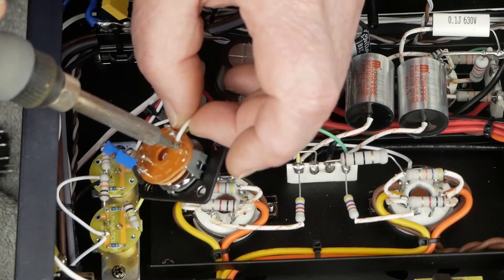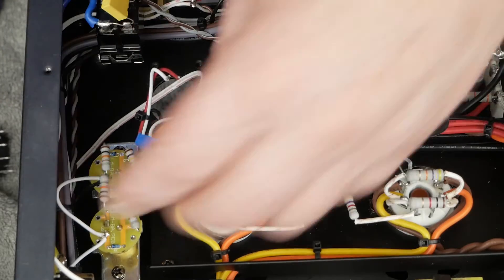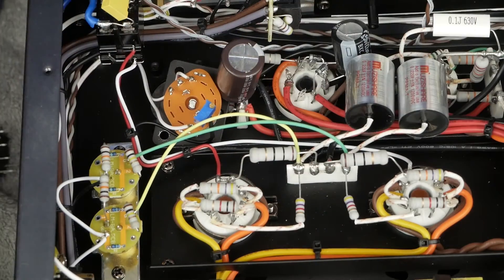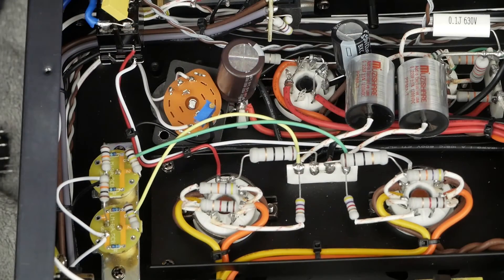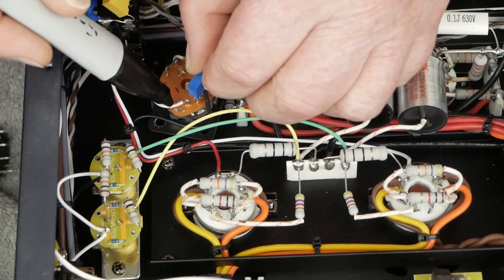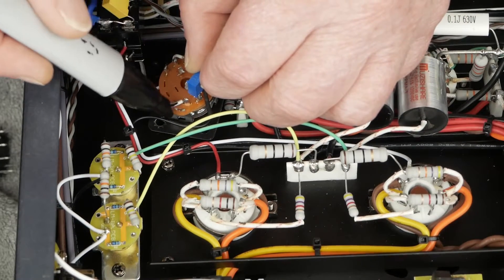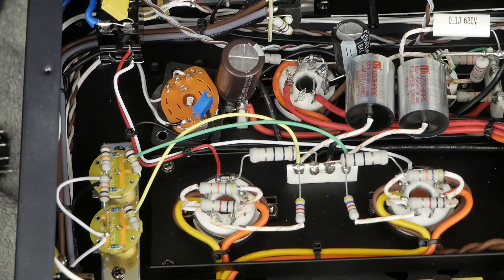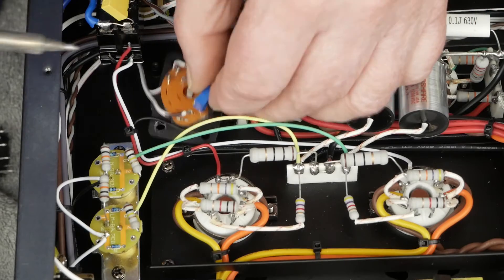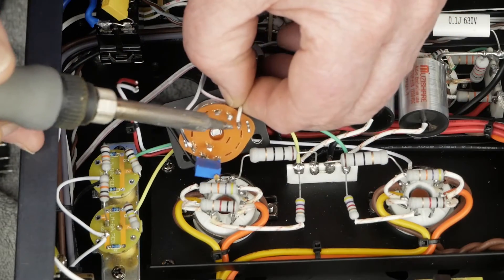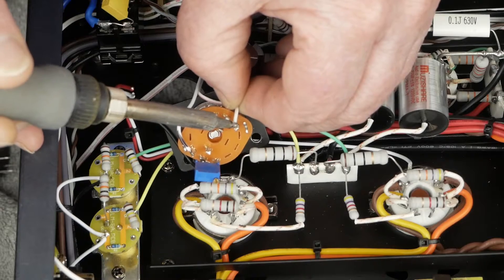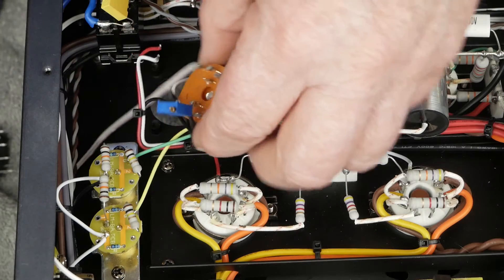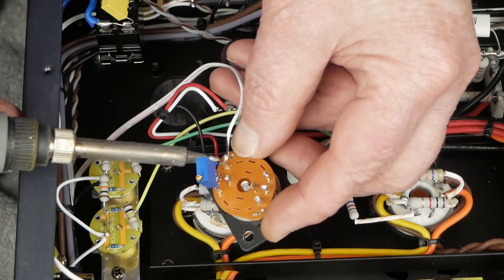Before we take the rest of these screws out, we're going to go ahead and disconnect some of these wires. It might help to have some little needle-nose pliers like this where you can heat up the joint and pull the wire away. Then I think I'm going to go ahead and take these last two screws out.